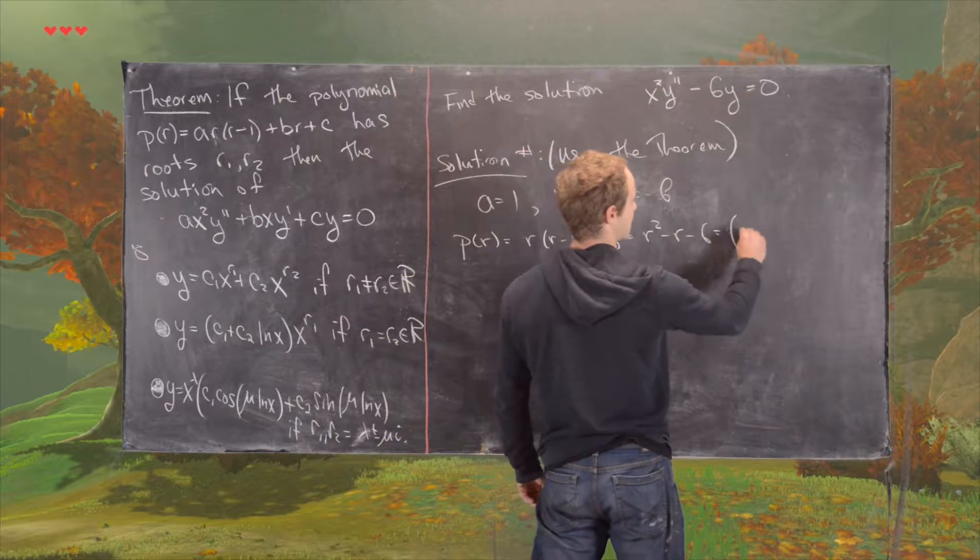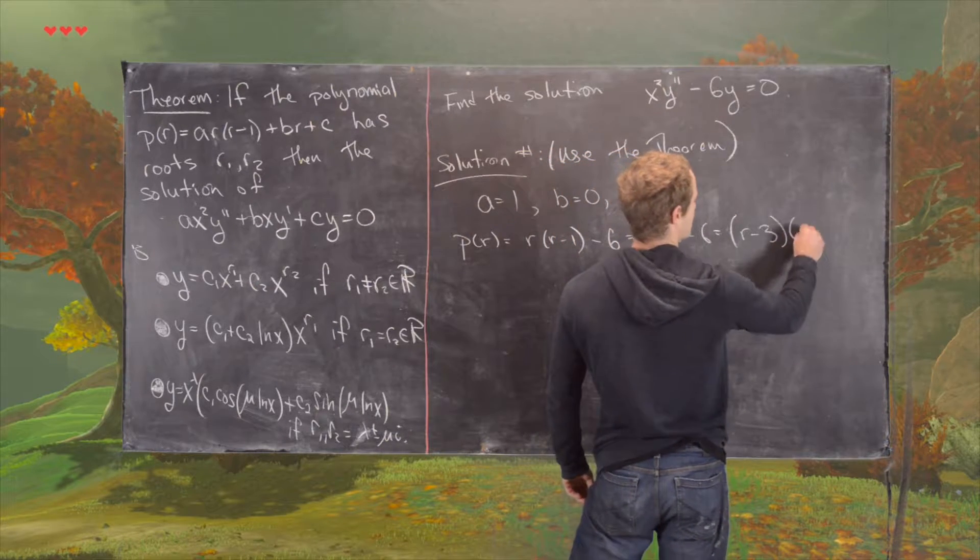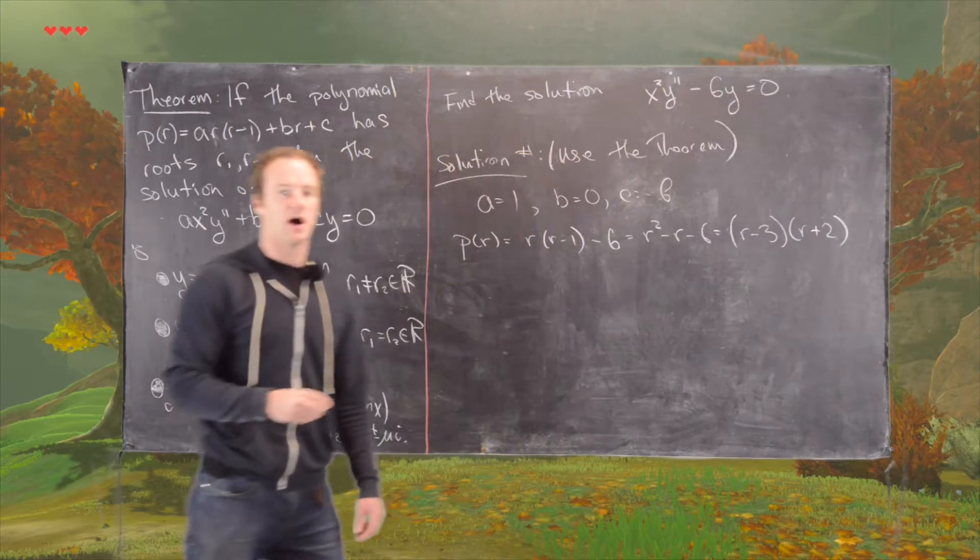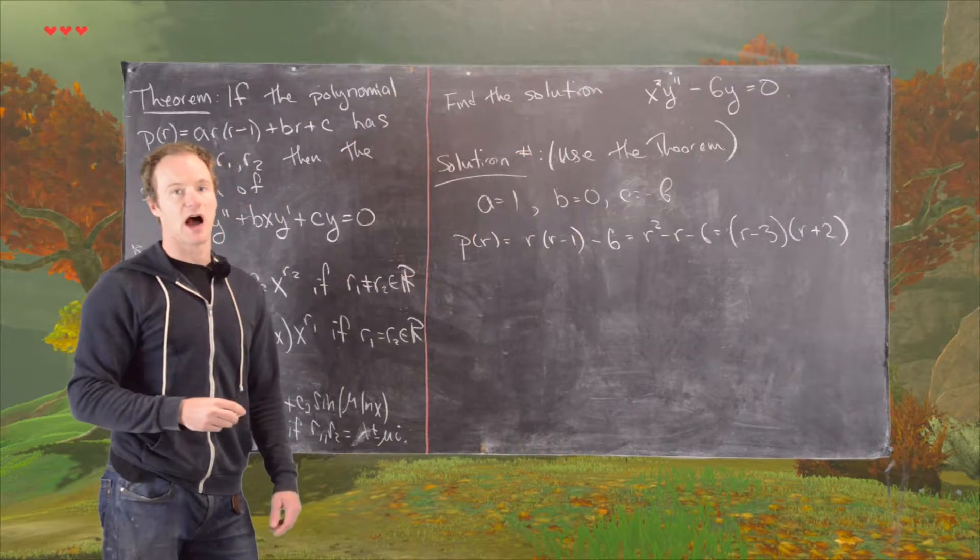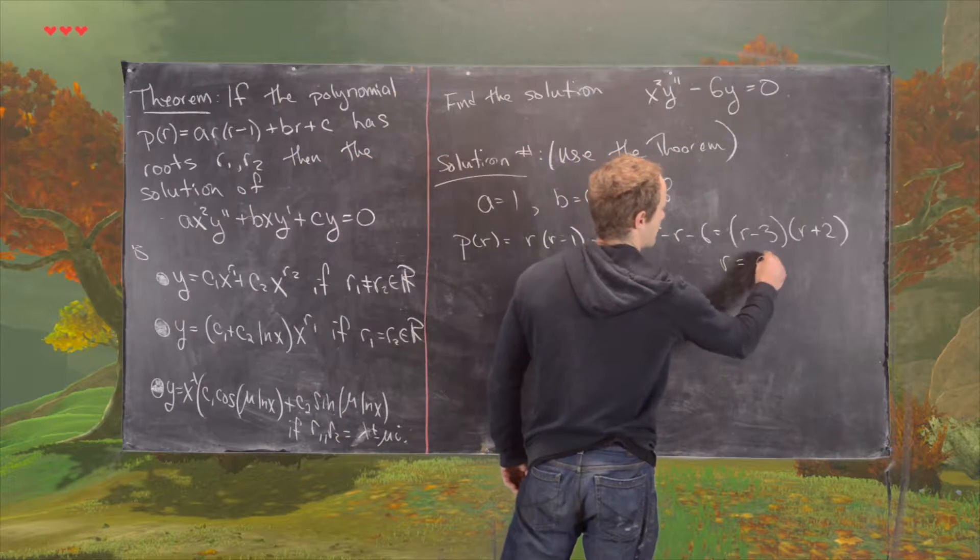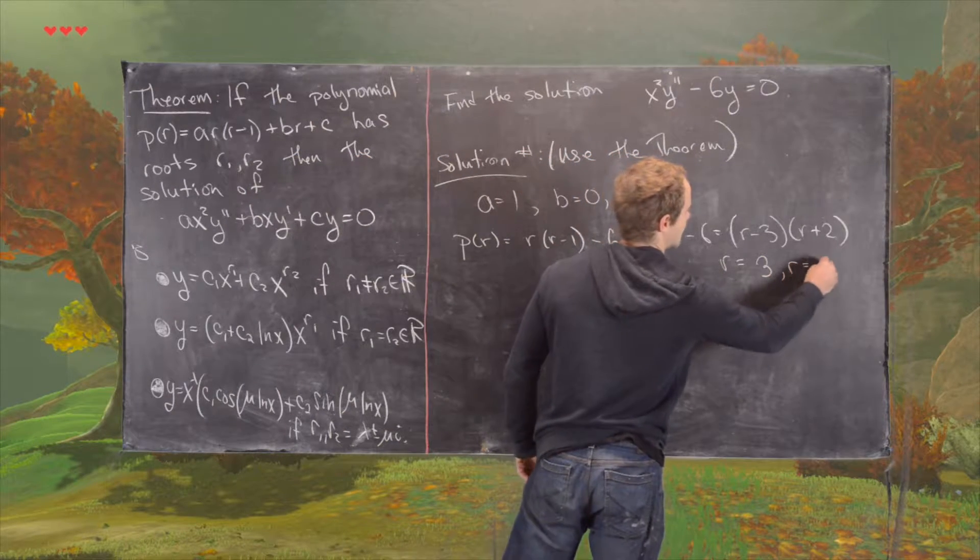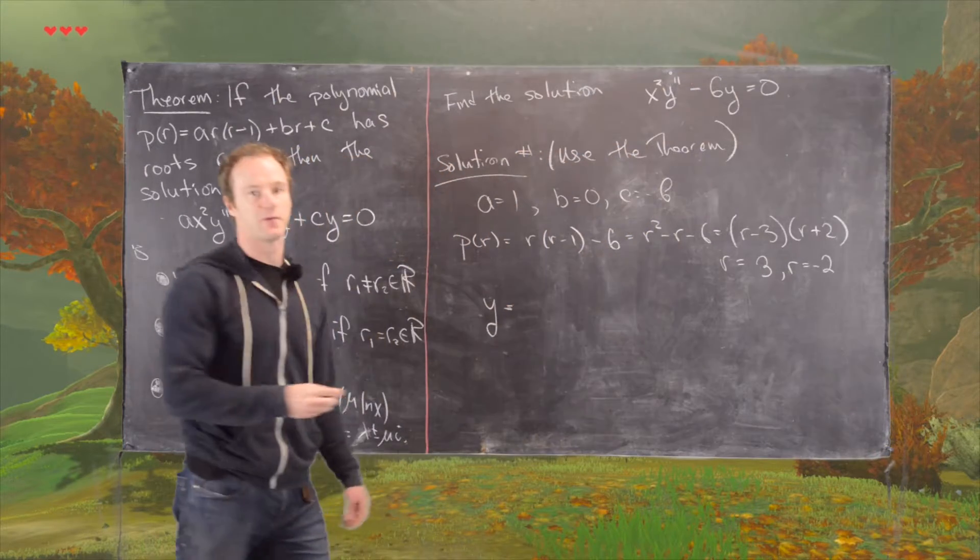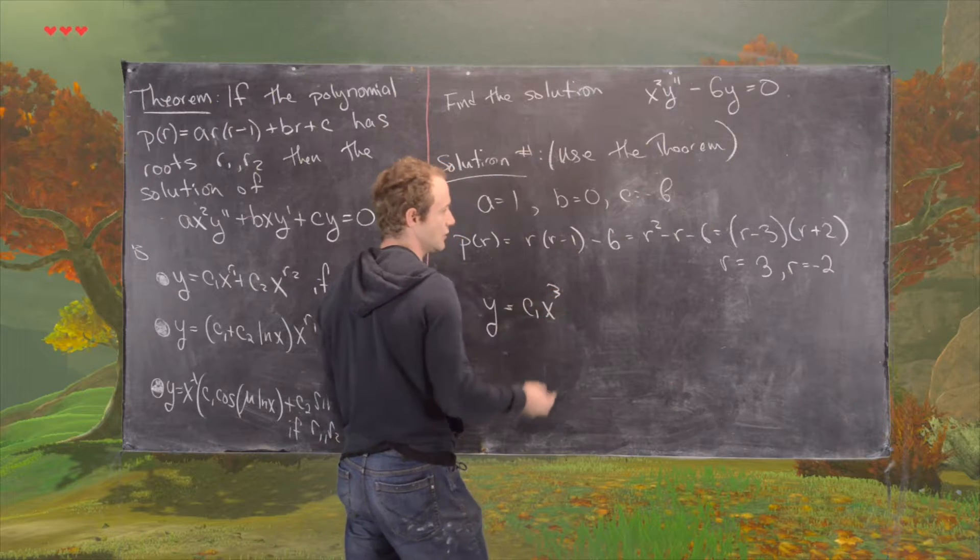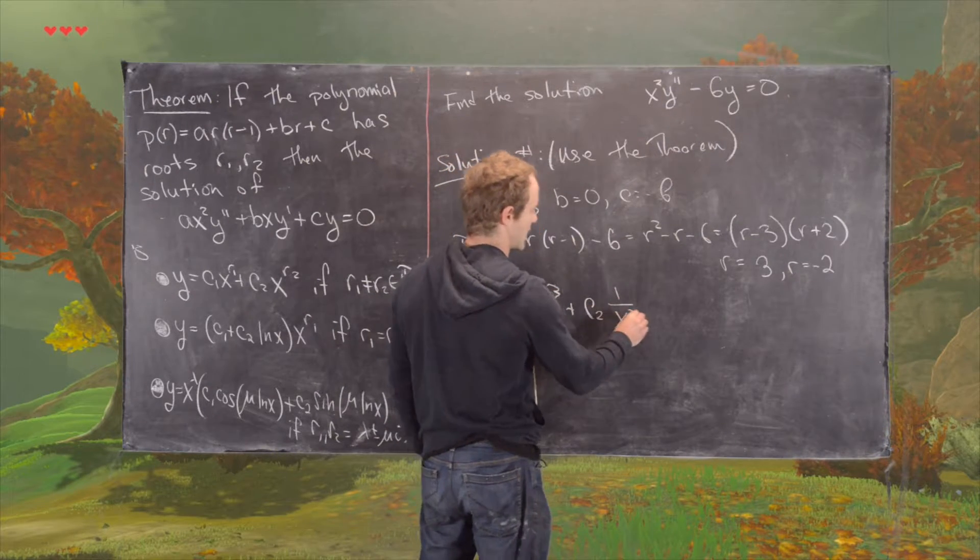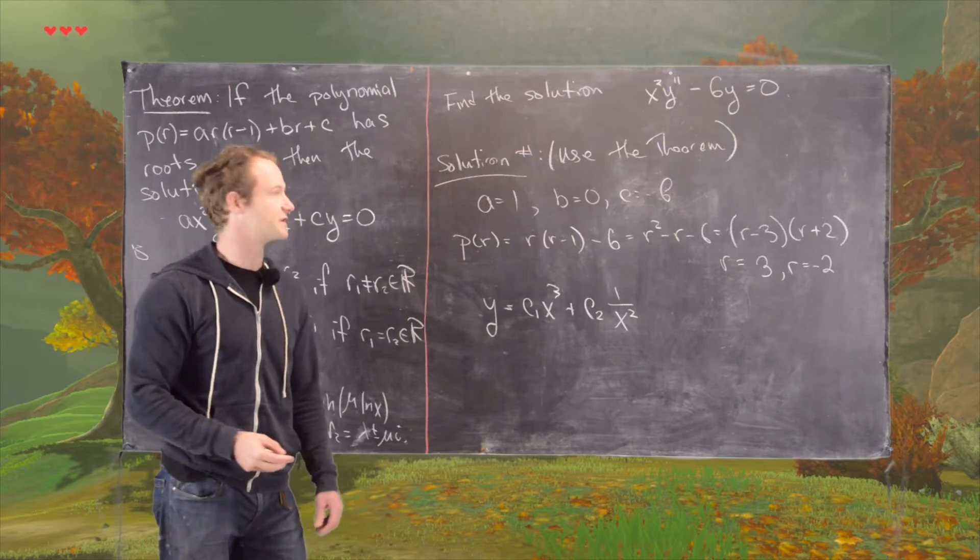And notice that thing factors like r minus 3, r plus 2. So that tells us we have two real roots, and they are not repeated. And so our real roots are positive 3 and negative 2, which tells us that our solution is of the form c1x cubed plus c2 times 1 over x squared, or x to the negative 2.